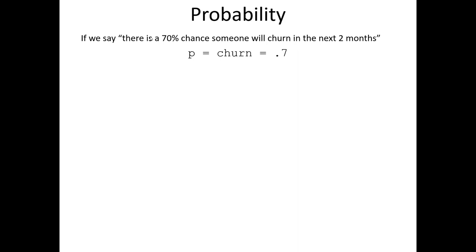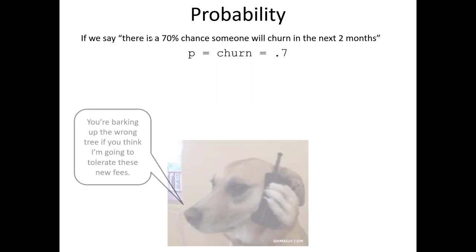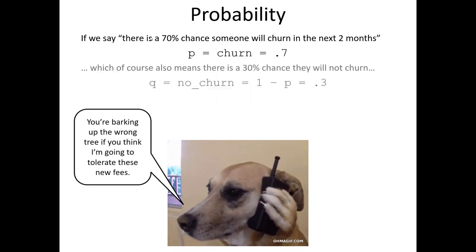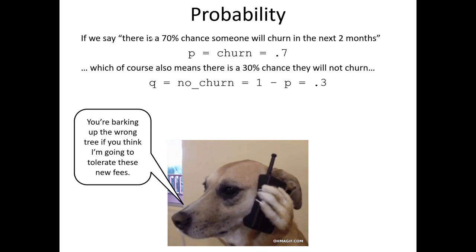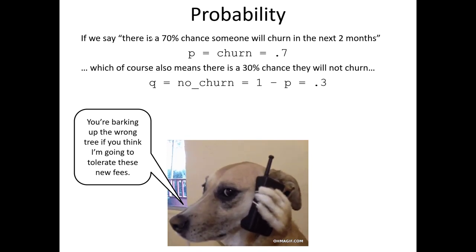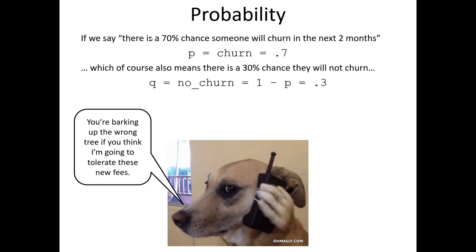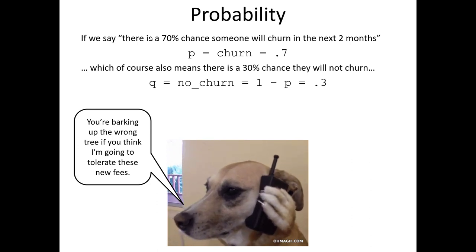First, let's be clear on what probability is. Probability is probably the type of probabilistic estimate you're most used to dealing with. For example, if we say there is a 70 percent chance that someone will churn from our telecom company in the next two months, we describe that as P(churn) = 0.7. In a world with only two potential outcomes — churned or didn't churn — the probability of not churning is necessarily 30 percent. In other words, P plus Q equals 1.